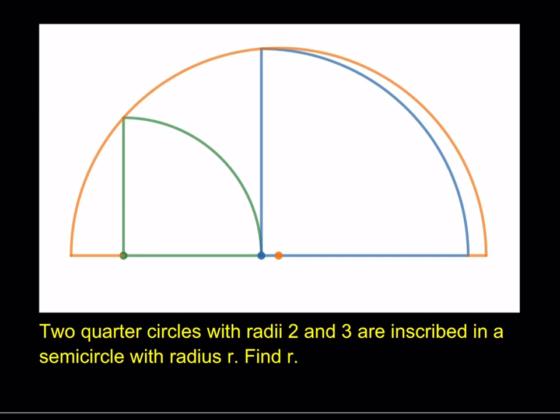So what are we going to do? We have a semicircle, we don't know the radius of the semicircle, and two quarter circles are inscribed in it and we do know their radii 2 and 3. So let's start by marking those. This is a 2, this is a 2, this is a 3, the height here and that's also 3.